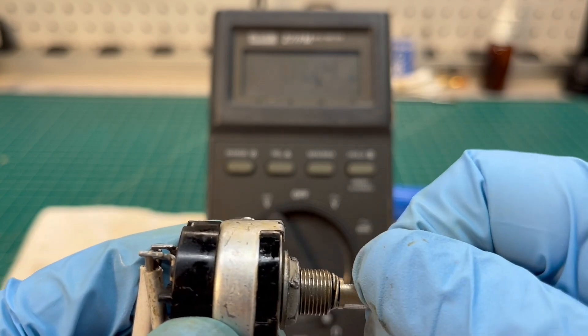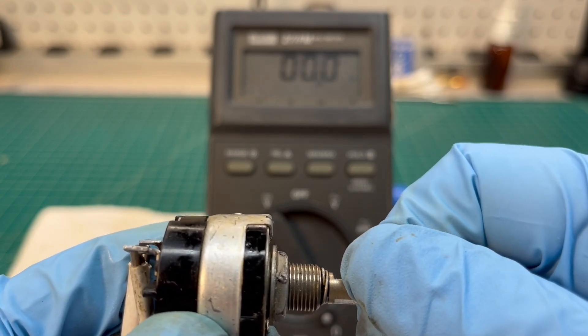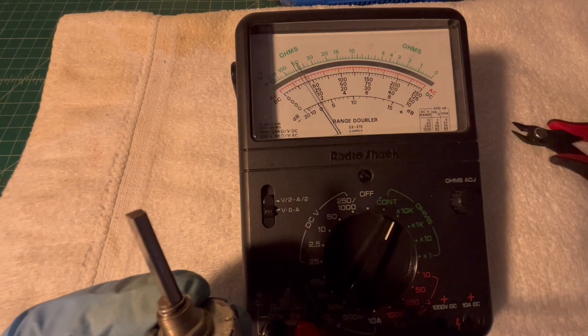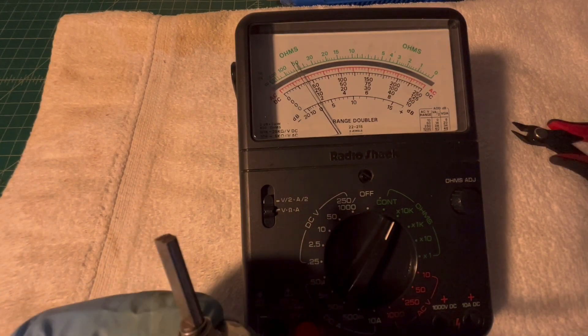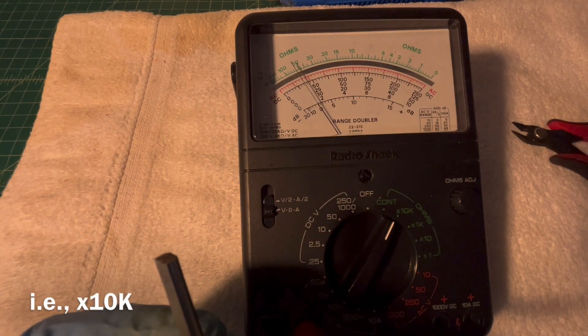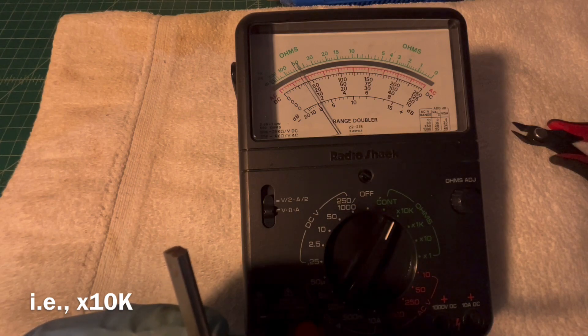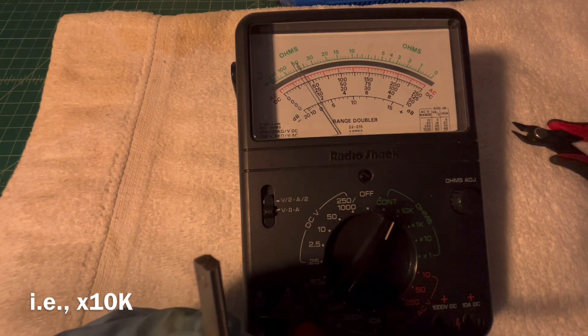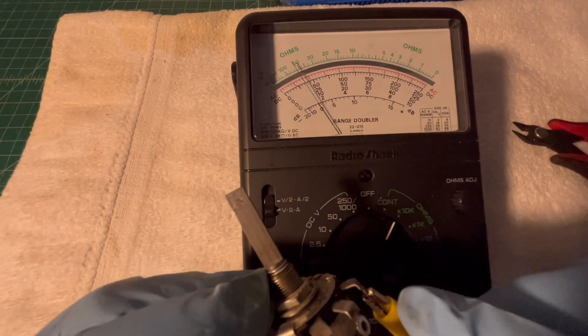You can see here we're times 10, so just north of 500k is called out on the schematic. That's what I was reading on the digital meter as well. Let me switch the lead now and run it through its rotation.